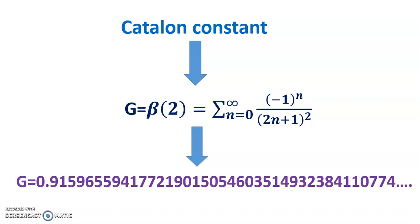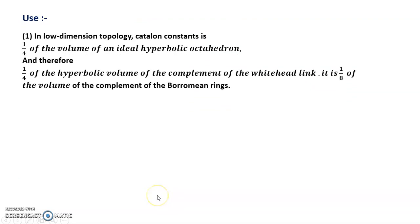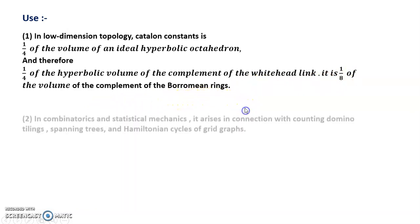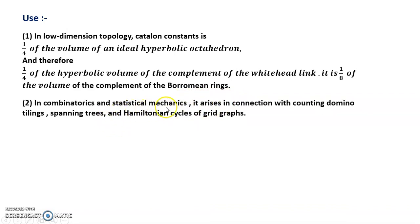Now I discuss the uses of the Catalan constant. In low-dimensional topology, the Catalan constant is one-quarter of the volume of an ideal hyperbolic octahedron, and therefore one-quarter of the hyperbolic volume of the complement of the Whitehead link. It is one-eighth of the volume of the complement of the Borromean rings.